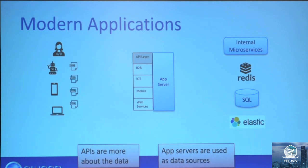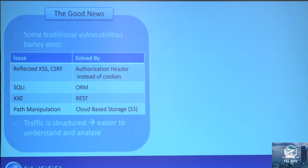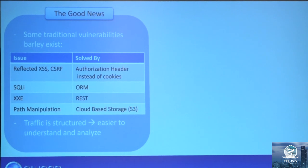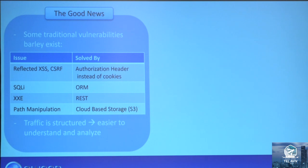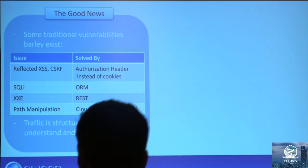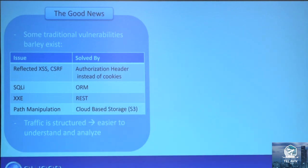This change has many implications. In the security field, there is good and bad news. Starting with the good news: many traditional vulnerabilities barely exist in APIs. Reflected XSS or CSRF are largely solved by the use of authorization headers instead of cookie-based authentication. In modern applications, SQL injections are rare because of ORM environments. Path manipulation vulnerabilities like directory traversal are largely solved because companies moved to S3 and cloud-based storage.